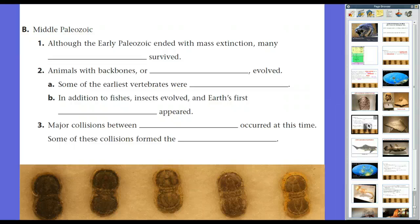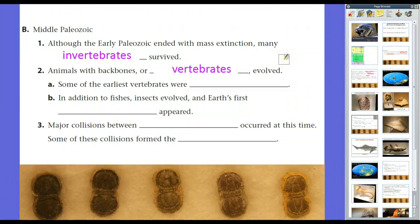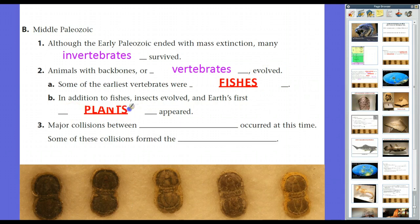Moving into the Silurian and Devonian eras — the middle periods of the Paleozoic Era — although the early Paleozoic Era ended with a mass extinction, many invertebrates survived mainly in the water. As a result, evolutionary trends culminated with animals with backbones — vertebrates — evolving. Vertebrates evolved at the beginning of the Silurian Period. Some of the earliest vertebrates were fishes. In addition, insects evolved, and Earth's first plants appeared, starting in the water and migrating to land. The Silurian and Devonian eras are what we call the Age of Fishes.